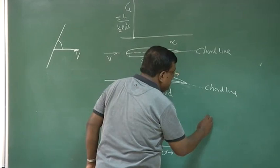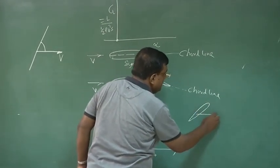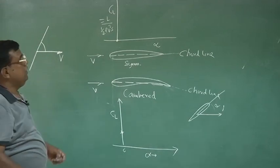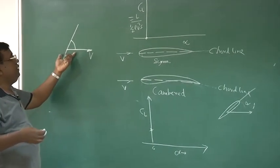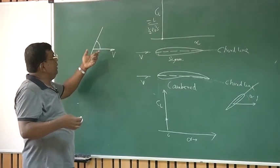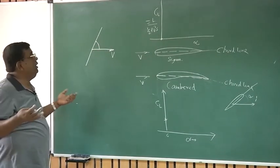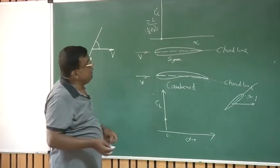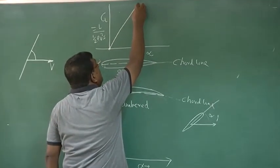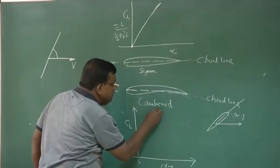As I increase this angle, what will happen? There will be more lift, because from George Cayley's explanation, lift will be a function of angle for a given area and given other conditions. So as I increase the angle, the lift will increase. We will find that up to a certain point, lift will go on increasing as alpha is increased.